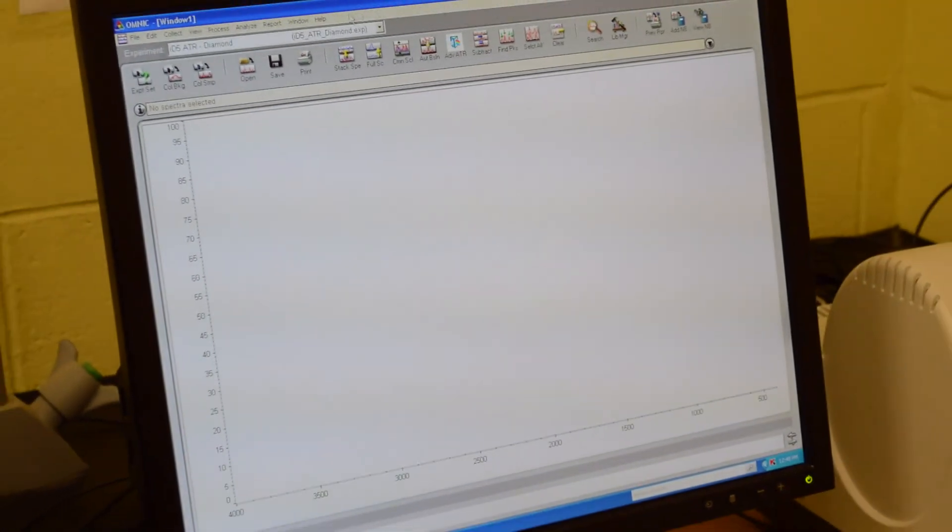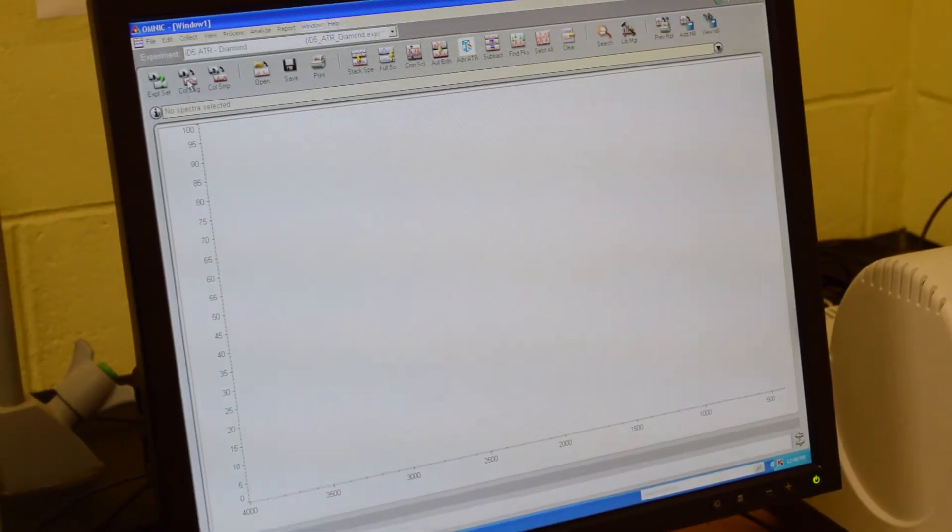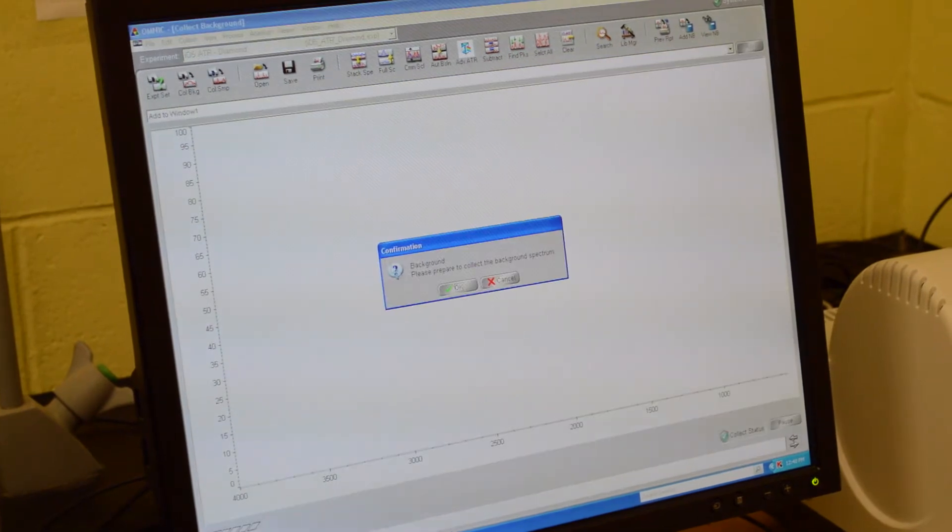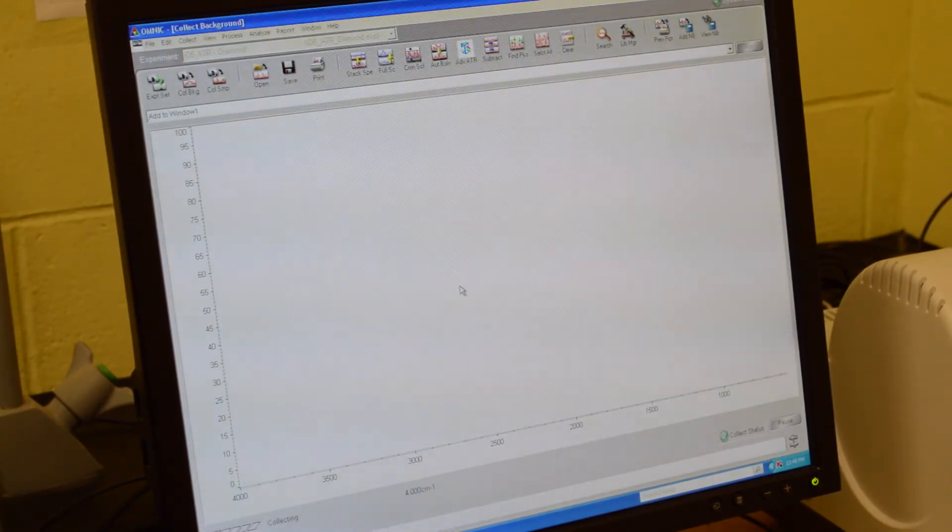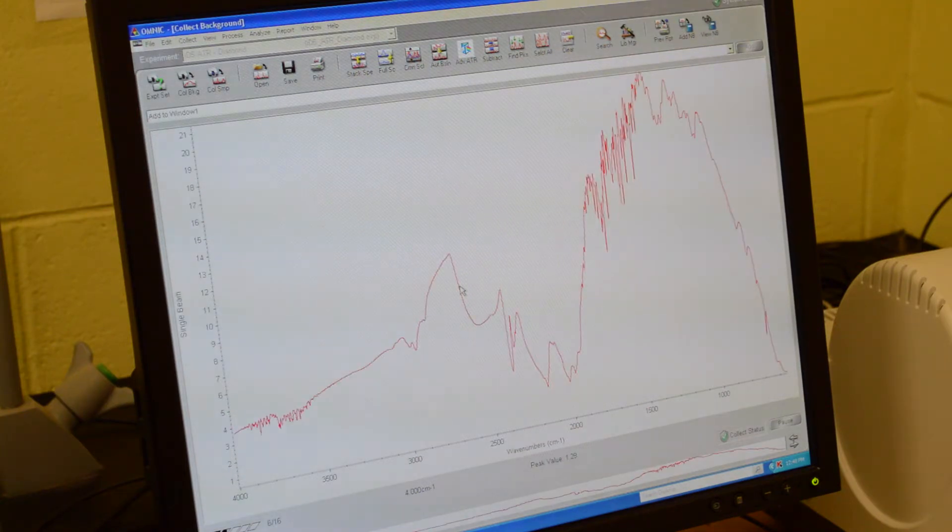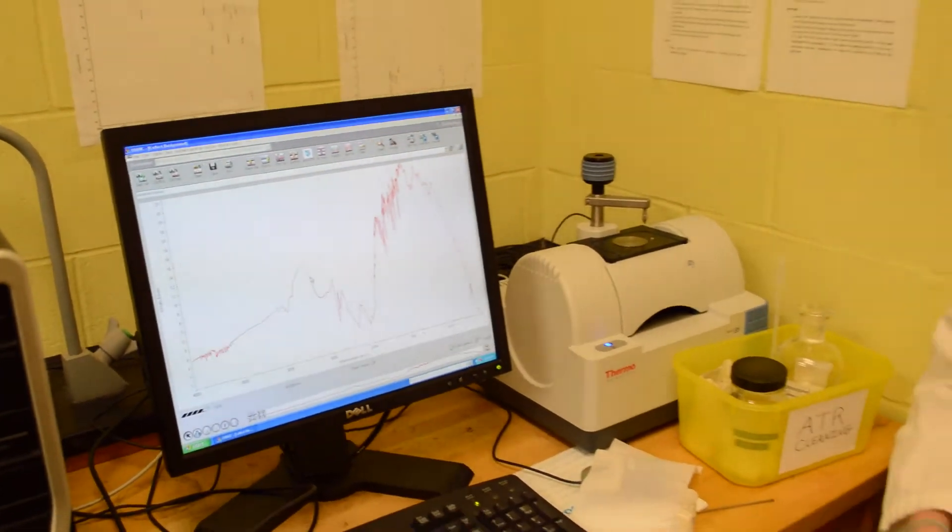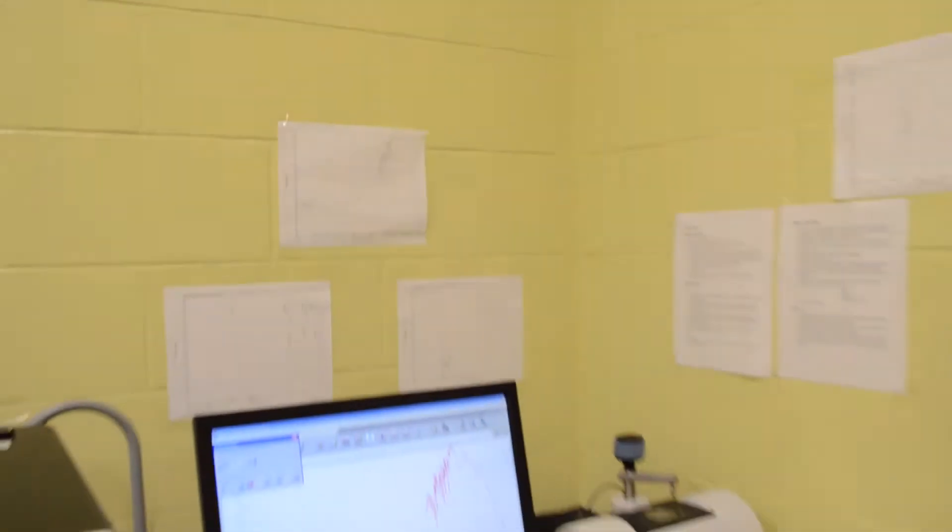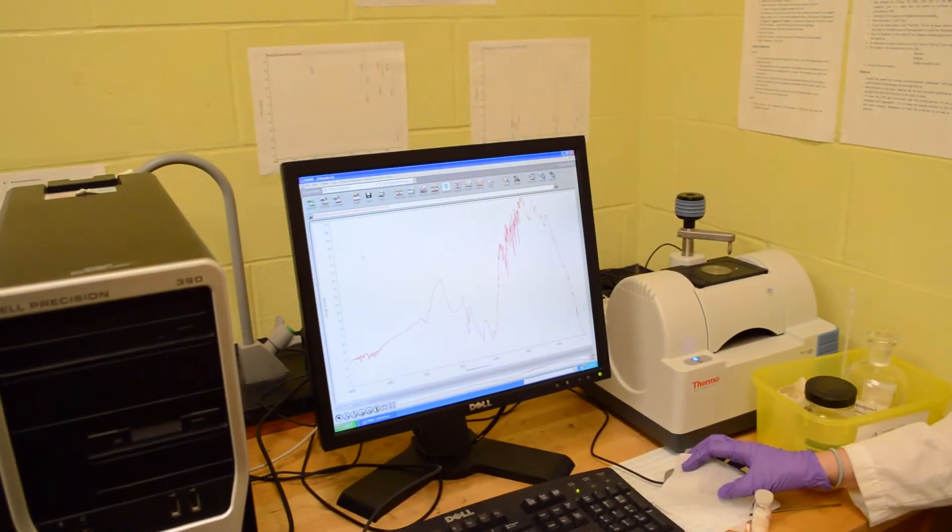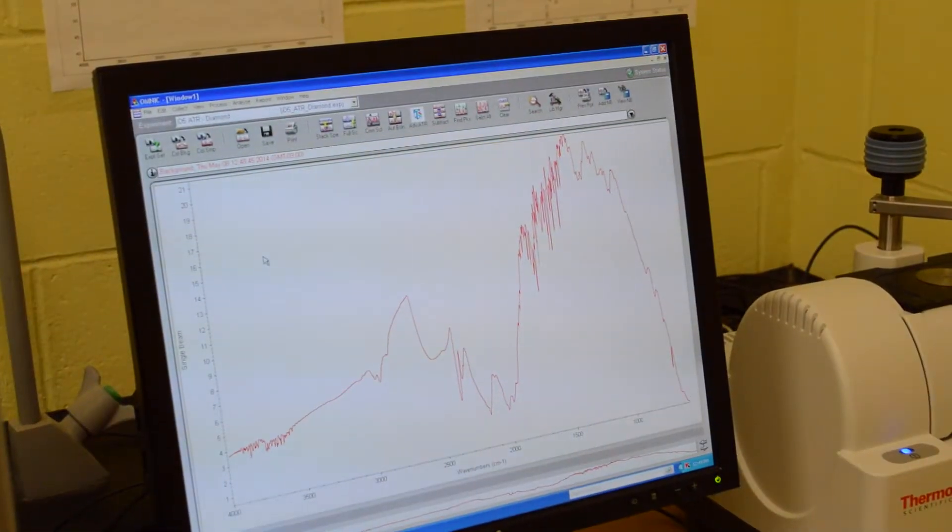Now the first thing you want to do for this is collect an air background. So you press collect background and it says please prepare to collect background. We're ready. So you press OK and it will scan 16 scans and this is what you normally expect an air background to look like. It's very messy but this is what it should look like. If you're ever unsure there's an air background posted on the wall. OK so we're going to add that to the window. Click on yes and now we're ready to actually look at our sample.